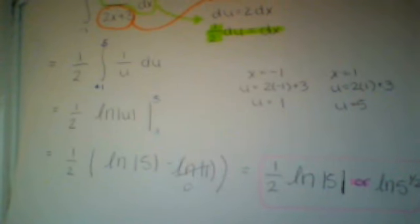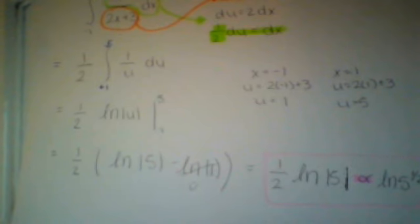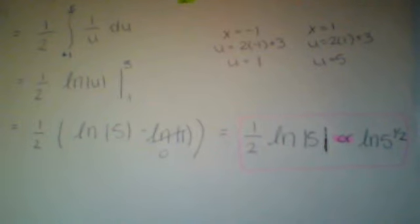Keep the constant out and subtract: ln absolute value of 5 minus ln absolute value of 1, which gives us 1/2 ln absolute value of 5.